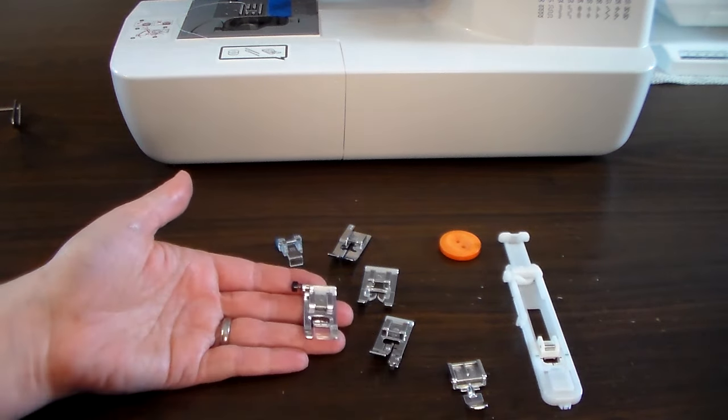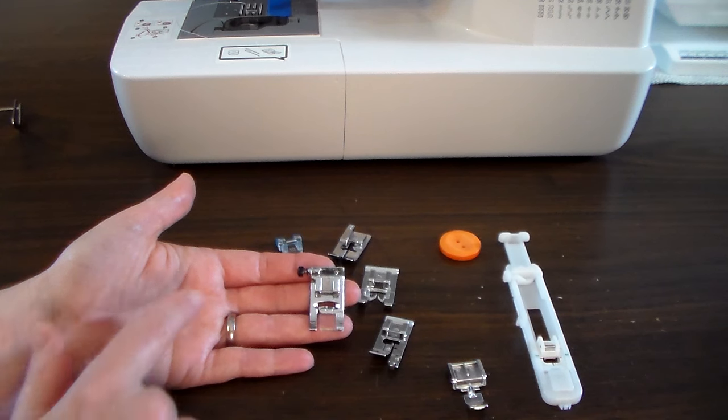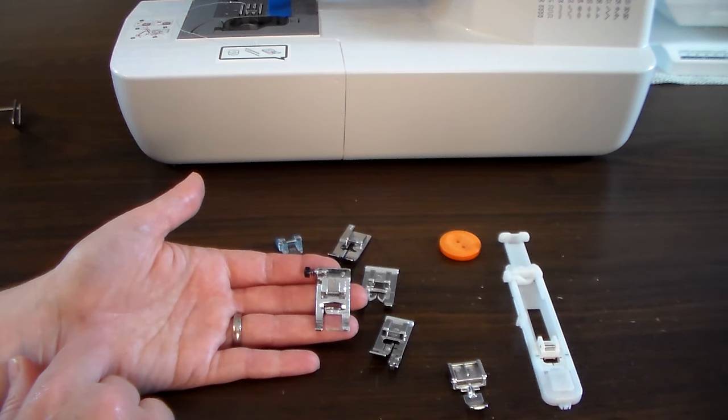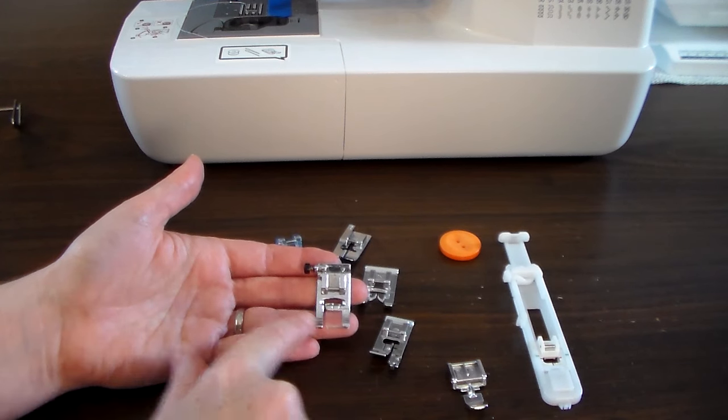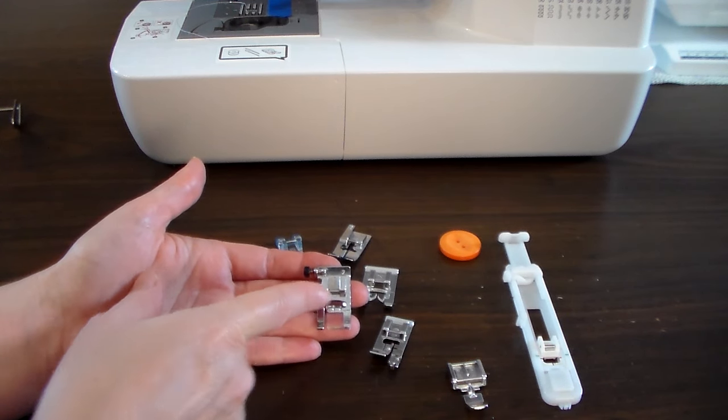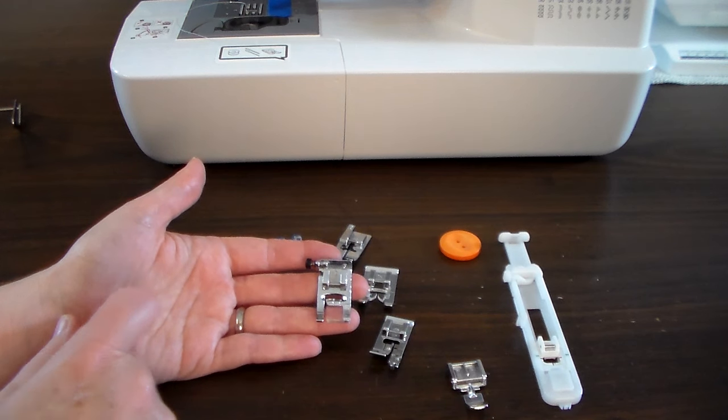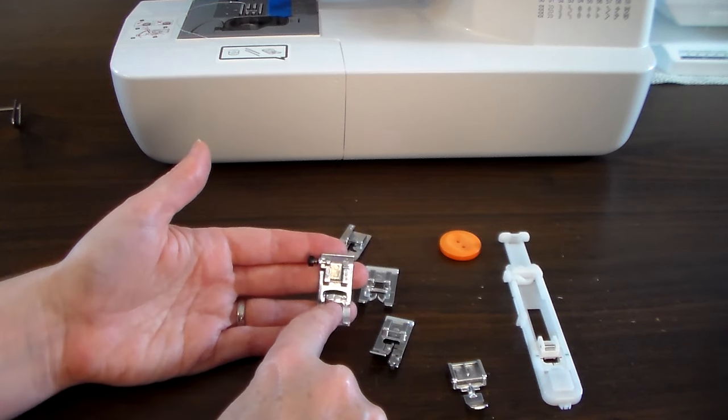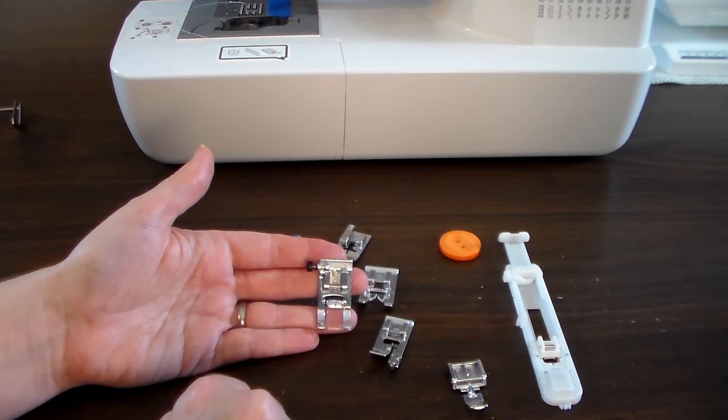The first foot is your all-purpose or multi-purpose foot, and this will usually already be on the machine when you purchase it. It has guides and an opening so that you can do decorative stitches, zigzag stitches, and straight stitches. The guides help you line up and ensure a nice straight stitch.